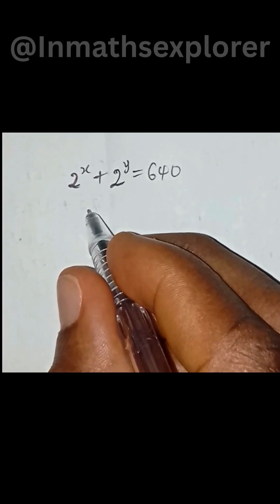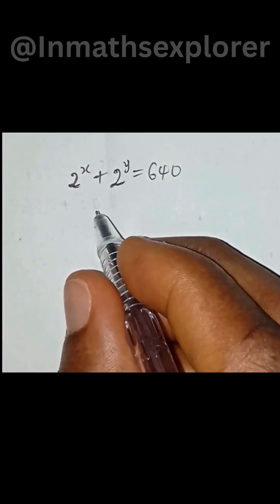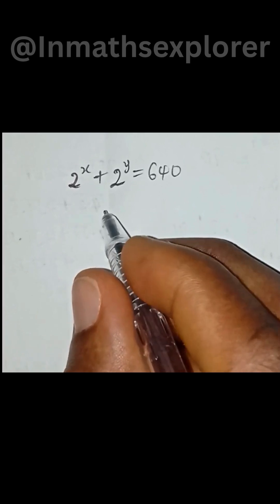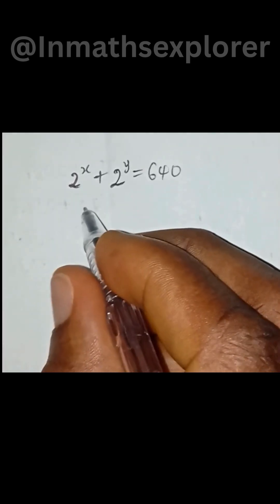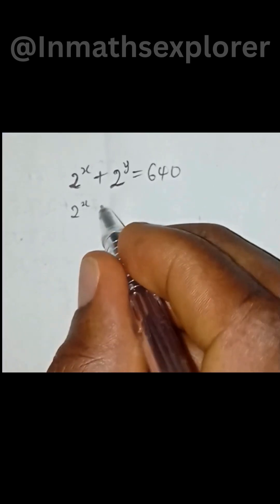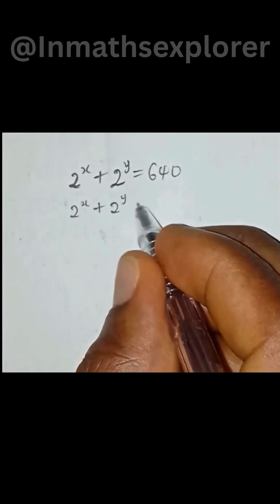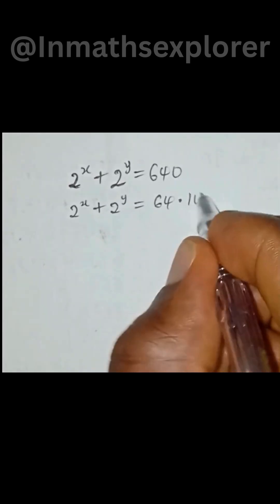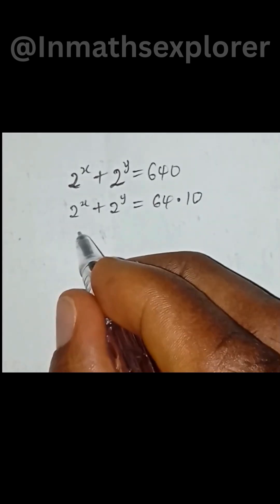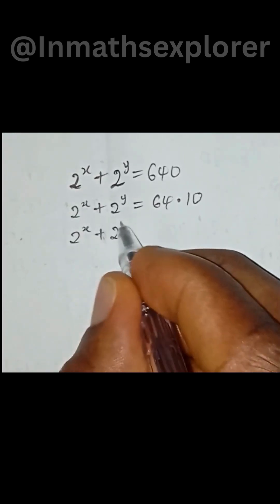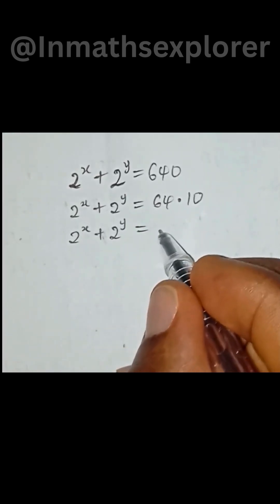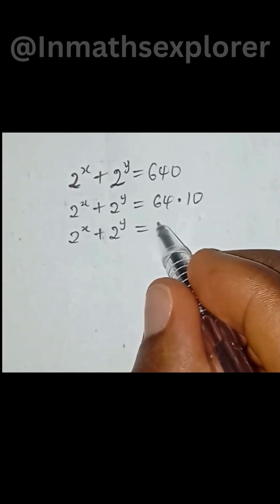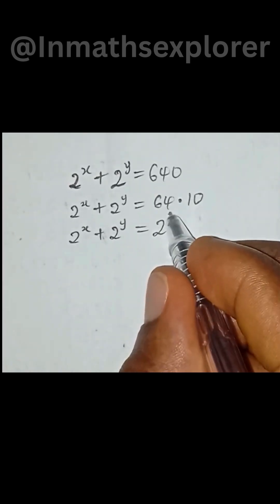Let's solve this algebraic expression and find the value of x and y. We have 2 to the power of x plus 2 to the power of y equal to 640, which can be simplified as 64 multiplied by 10. This can be written as 2 to the power of 6, then into brackets we can split this as 2 multiplied by 5.